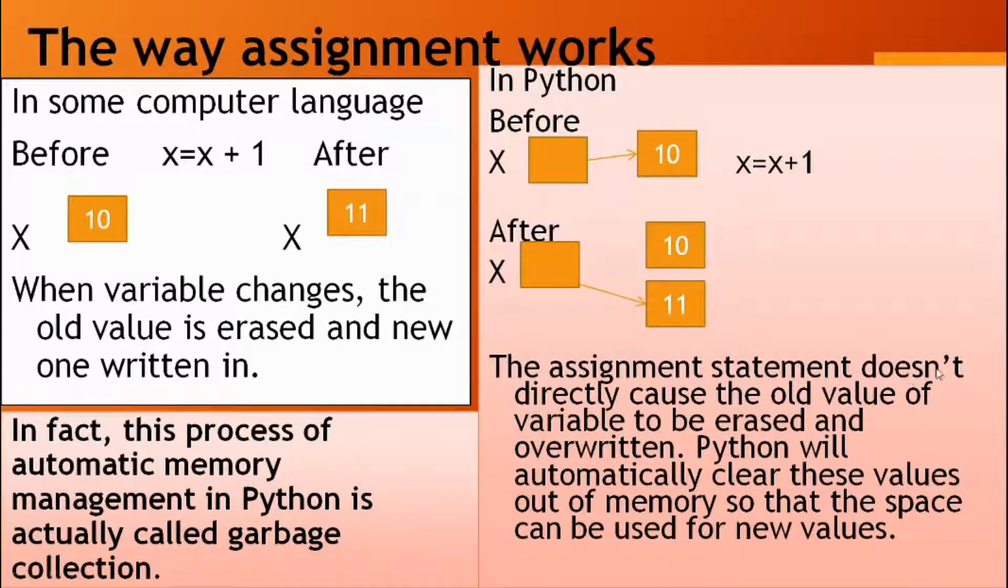What happens here? The assignment statement does not directly cause the old value of the variable to be erased and overwritten. Python will automatically clear this value out of memory so that the space can be used for new values. This process of automatic memory management is called garbage collection.